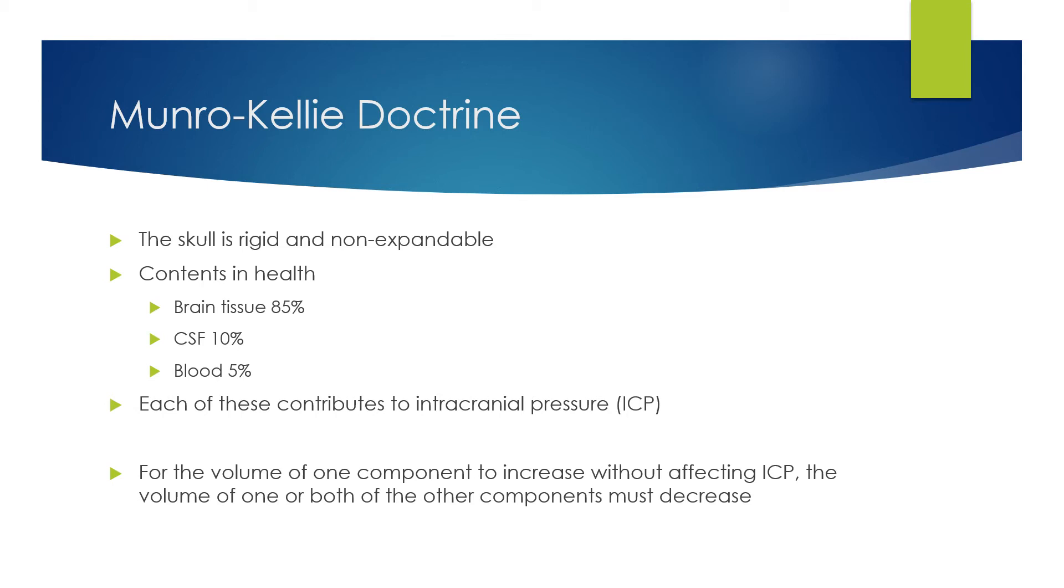Within it, in health, about 85 percent of its contents are brain tissue, with about 10 percent cerebrospinal fluid or CSF, and about 5 percent blood. Each of those components contributes to your intracranial pressure, your ICP. The Munro-Kelly doctrine is that for the volume of one of these components to increase without having an effect on the intracranial pressure, the volume of one or both of the other components must decrease.